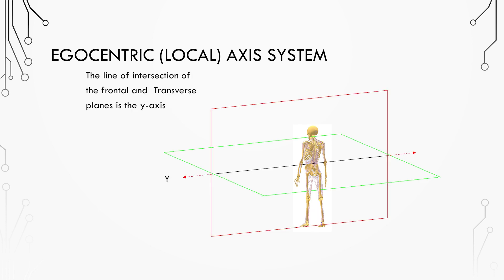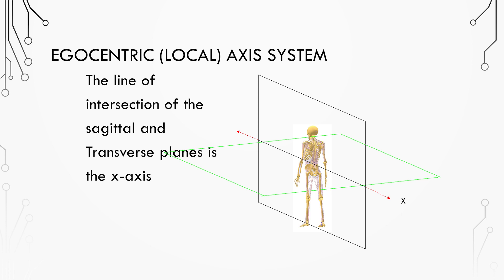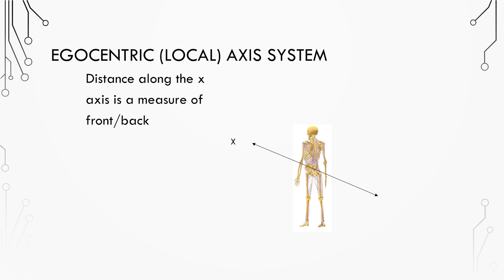The line of intersection of the frontal and transverse planes is the y-axis. Any movement along this axis is a measure of left and right. The line of intersection of the sagittal and transverse planes is the x-axis. Any movement along this axis is a measure of forward and backward.